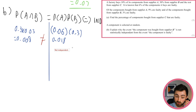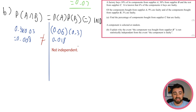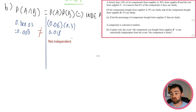Intuitively, the different suppliers have different rates of faulty components. So the probability of a component being faulty clearly depends on which supplier it came from — they're not independent. Question three: Nisir is playing a game with two friends. The probability of Nisir winning each game is one third. They play 15 times. Find the probability that he wins exactly two games.